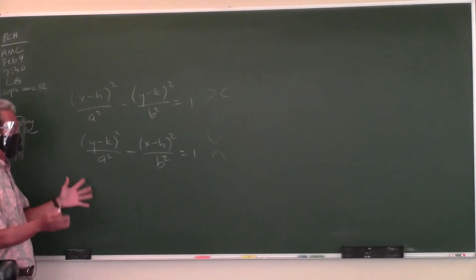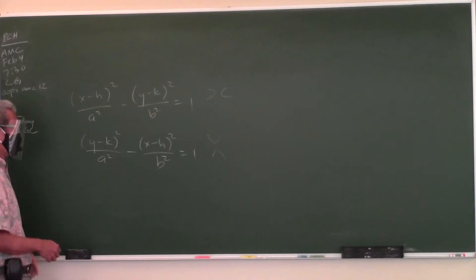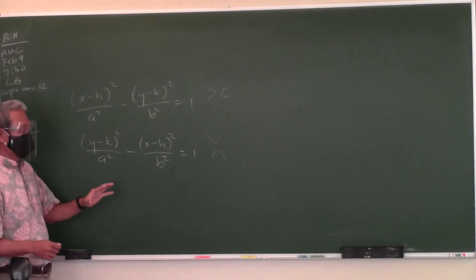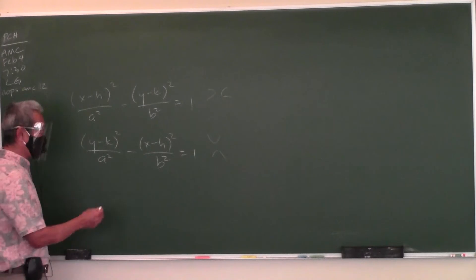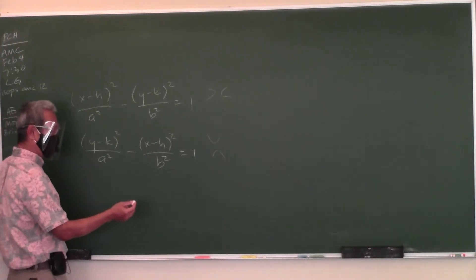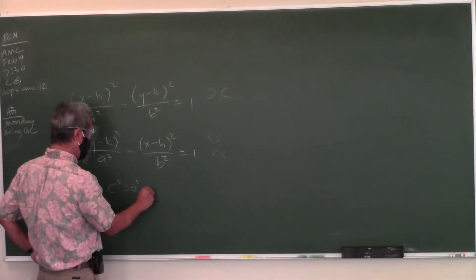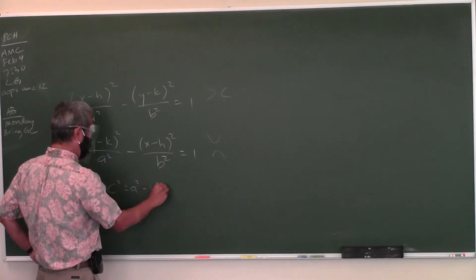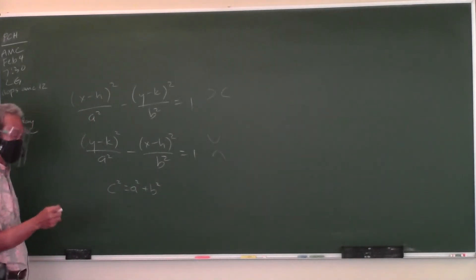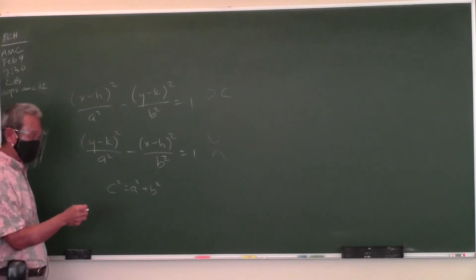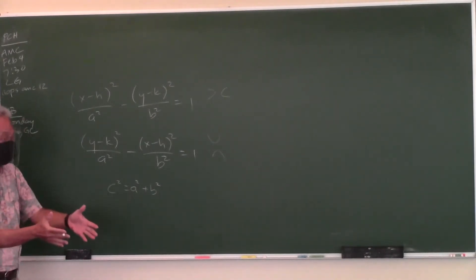The equation that relates a, b, and c in a hyperbola: in an ellipse it's c² = a² − b², but in a hyperbola it's c² = a² + b².